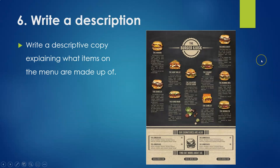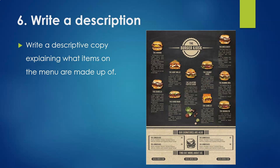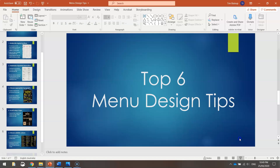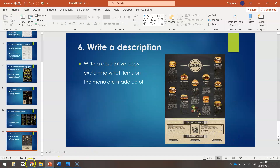My final tip, number six, is to write a description of the items on your menu. Each item should have its name and a description of what goes into it. The reason we include that description is to help customers make up their mind and make sure they are making the right choice when they order. Those are my six tips for menu design — let's get over to Adobe Spark and start making our menus.